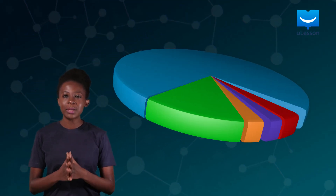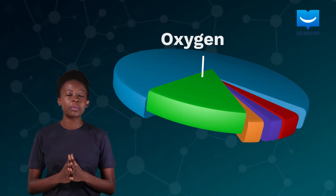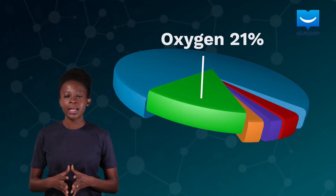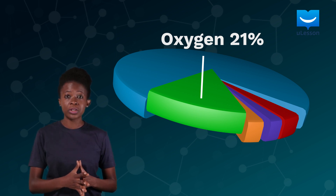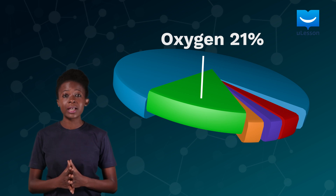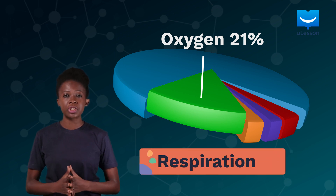As said earlier, air is very important for the existence of life. Without it, plants and animals cannot live. One of the main constituents of air is oxygen. We learned in our lesson on what is air that oxygen constitutes approximately 21% of air's volume. It is a gas that keeps humans and other animals that live both in water and on land alive through a process known as respiration.